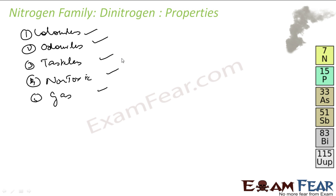Think about it — in front of you there is so much Nitrogen, because the atmosphere has almost 70% Nitrogen. You can't see it because it is colorless. You can't smell it because it is odorless. You can't taste it because it is tasteless. It is not causing you any harm because it is non-toxic. So even if you don't remember, just think that you are surrounded by Nitrogen and these properties will come to mind by default.